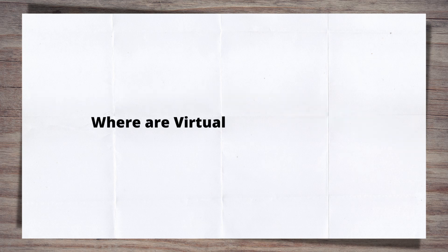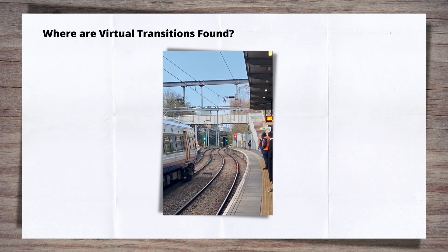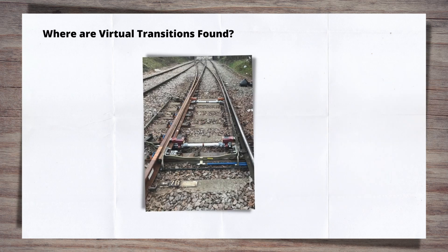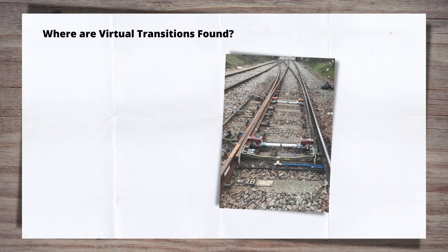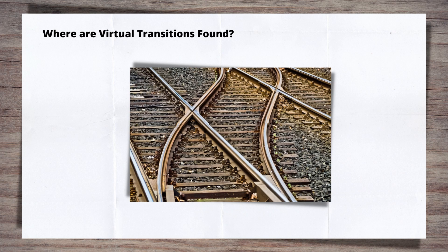So where would you find a virtual transition? You can find them between curves of different radii, but the same cant. You find them at the toes of switches on the turnout route, and also at changes of the radii within the S and C.